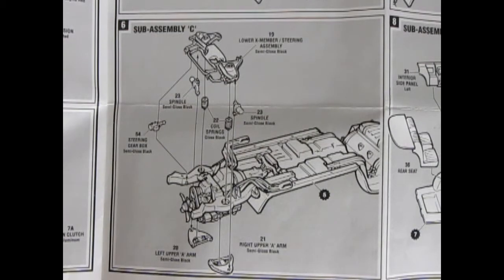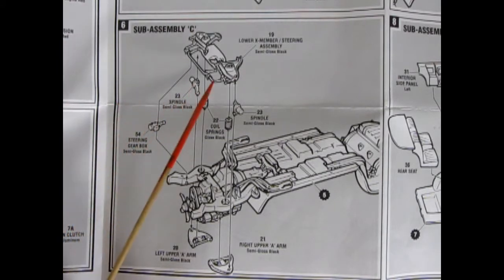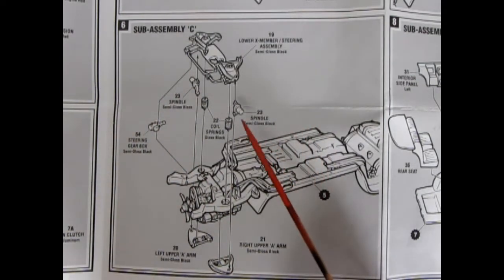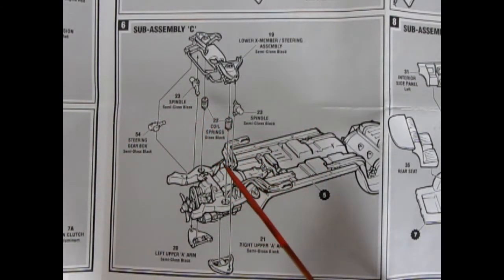Now, here we have an interesting thing because this is step number six, but they call it sub-assembly C, which is rather strange that this isn't sub-assembly B being step number six. But, at any rate, we have our lower X-member here with the lower A arms. We've got our spindles going in there and our coil springs.